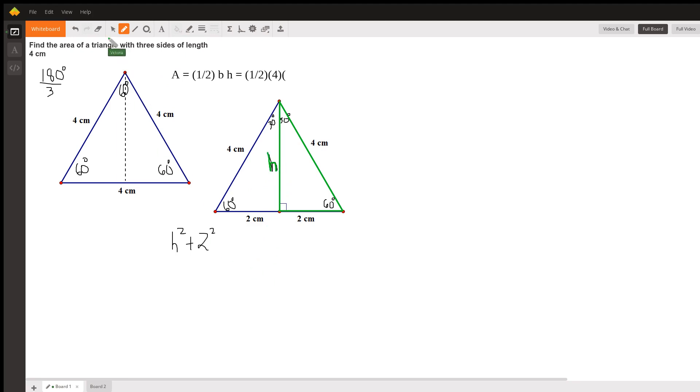So we're going to do the Pythagorean theorem. That's a squared, which for us is h, plus b squared, which for us is 2, equals c squared, which for us is 4.